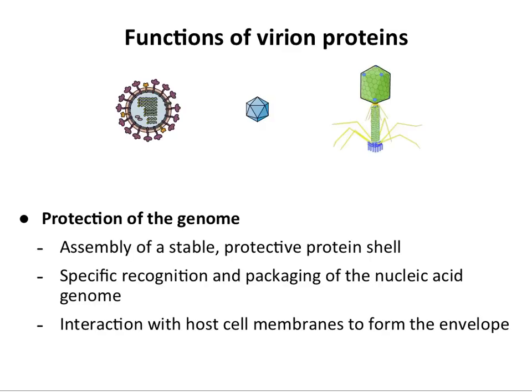Viruses are made up of different components. A major one is proteins, and these proteins have very specific functions no matter what the virus looks like. We have diverse-looking viruses, but those proteins that comprise the virion have a number of functions. They have to make a protective shell for the genome — the genome is the important part; it transfers genetic information from one cell to another and has to be protected. The structural proteins also have to recognize the genome so it can be incorporated into the shell. And for those viruses that have a lipid envelope, the proteins have to interact with the host cell to form that envelope.